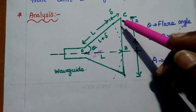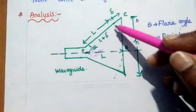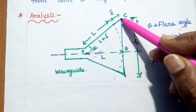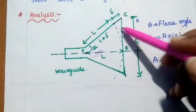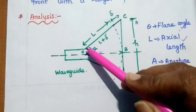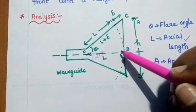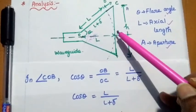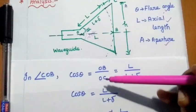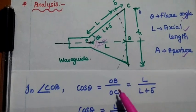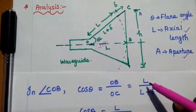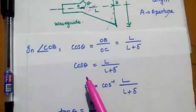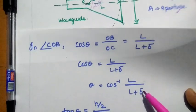Since it is a straight line, we can make an arc of the same axial length L. Apart from that, there is an extended part to make it a straight line — that part is delta. Considering the angle COB, cos theta is OB divided by OC. Here OB is L and OC is L plus delta, so theta equals cos-inverse of L divided by (L plus delta).